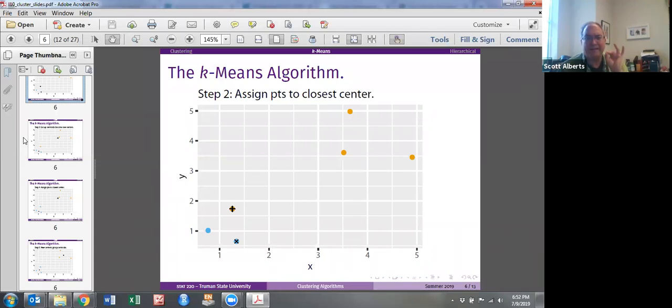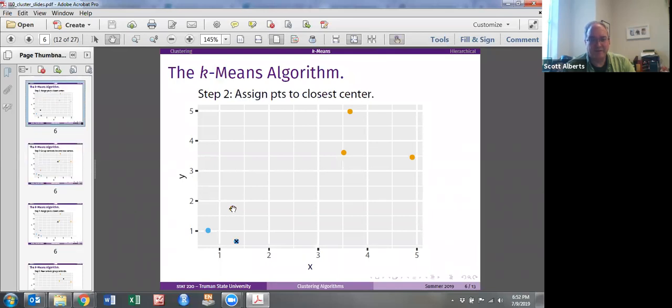Then what we do is we calculate the average of all of our points. In two space it's pretty easy to do. You just add up all the x values, divide by four, add up all the y values, divide by four. Two points, the midpoint of the two is the mean. Here the midpoint is a little bit different. So the center of the yellow cluster is now moved to here and the center of the blue cluster is moved to here.